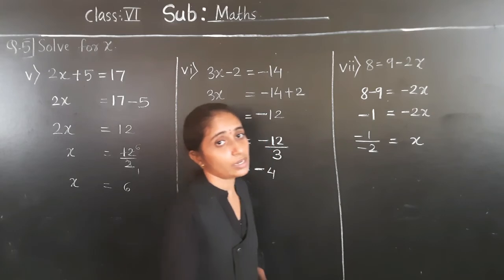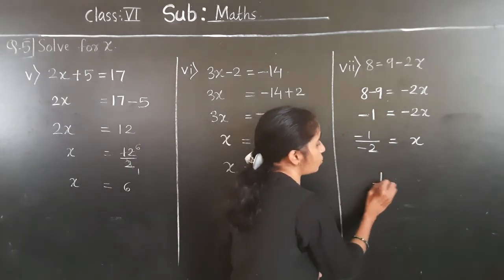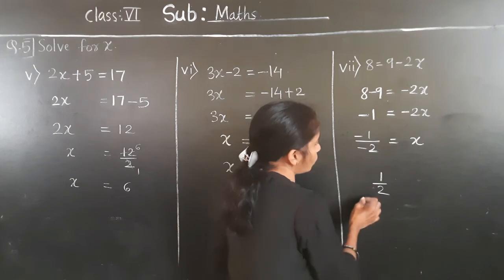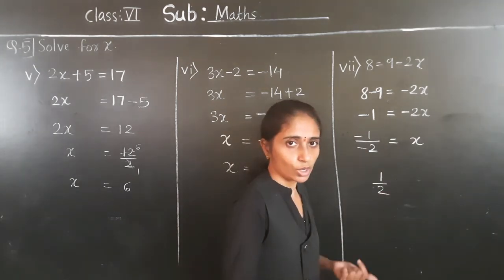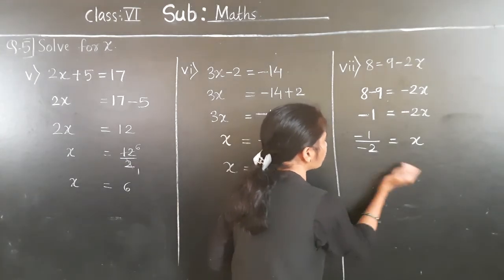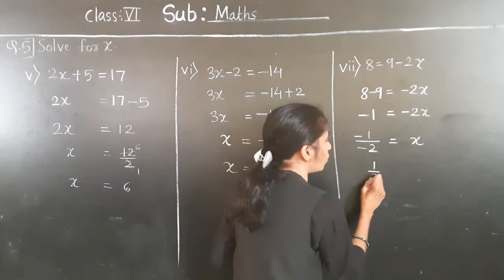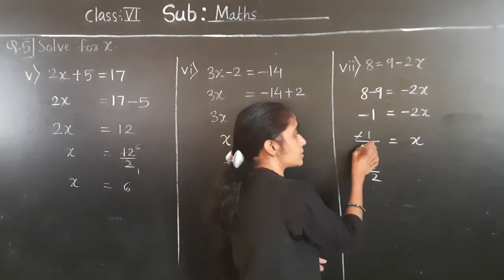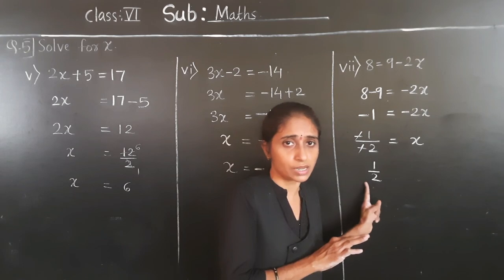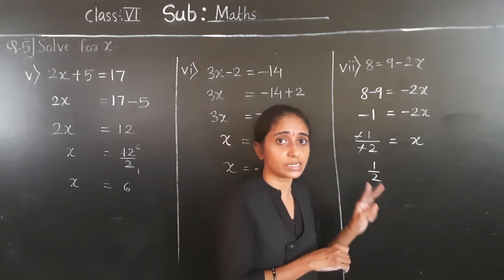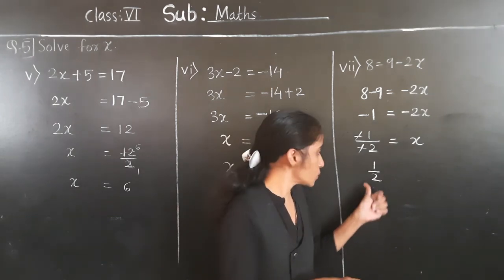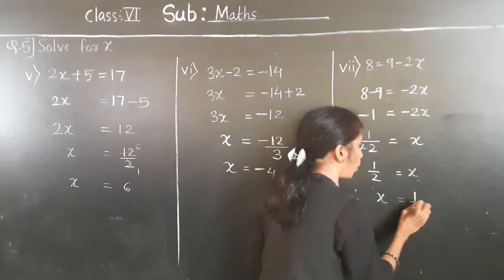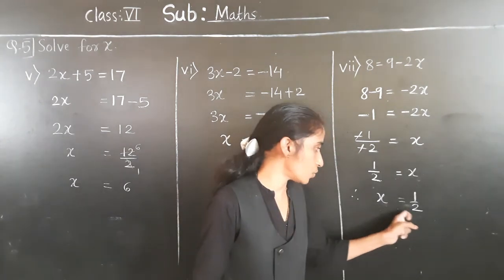When we divide a negative integer by a negative integer, we divide them as a whole number. So we get 1 upon 2. Put a positive sign before the quotient — or you can see it as: the minus on the numerator and the minus on the denominator cancel each other, making it positive. In division, if both numbers have a negative sign, the quotient is positive. So x is equal to 1 upon 2.